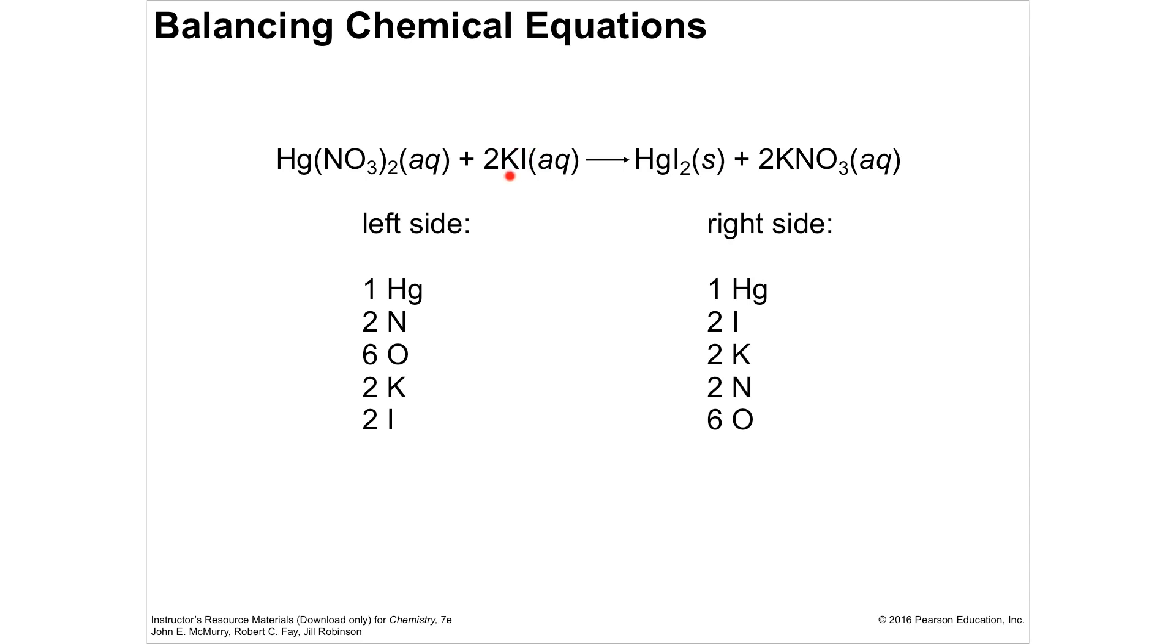And then potassium is broken off with the iodide and joined with the nitrate. So they've switched places, they've switched partners. So on the left side, I've got one mercury and one mercury on the right side.